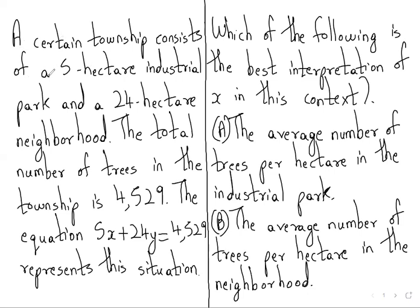A certain township consists of a 5 hectare industrial park and a 24 hectare neighbourhood. The total number of trees in the township is 4529. The equation 5x plus 24y equals 4529 represents this situation.